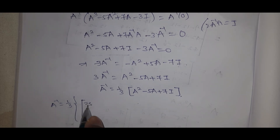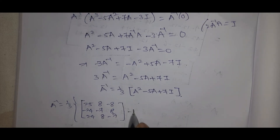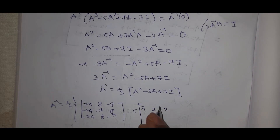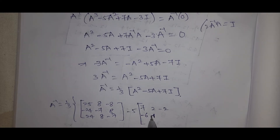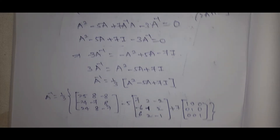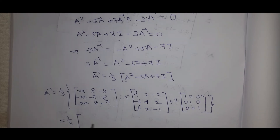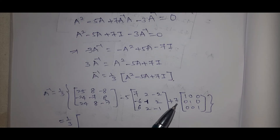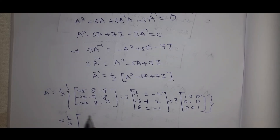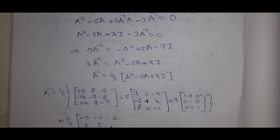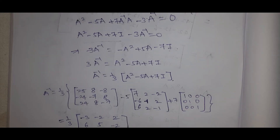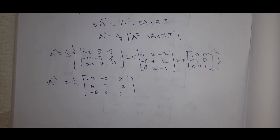So A inverse equals 1 by 3 into (A squared minus 5A plus 7I). Substituting A squared as 25, 8, minus 8; minus 24, minus 7, 8; 24, 8, minus 7, minus 5 times A which is 7, 2, minus 2; minus 6, minus 1, 2; 6, 2, minus 1, plus 7 times identity matrix. We compute this addition to get A inverse.